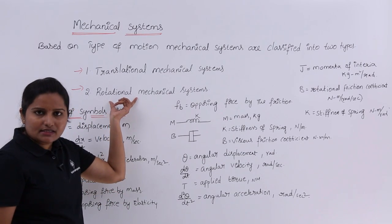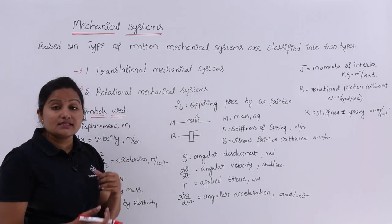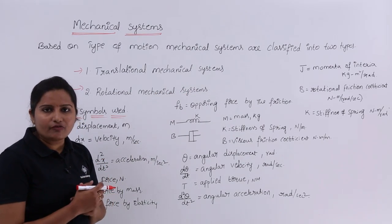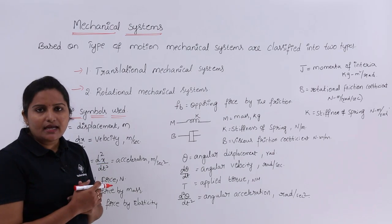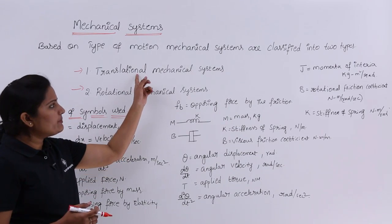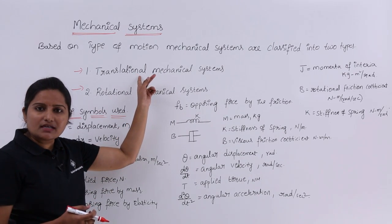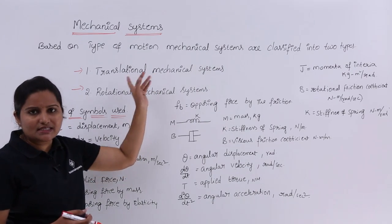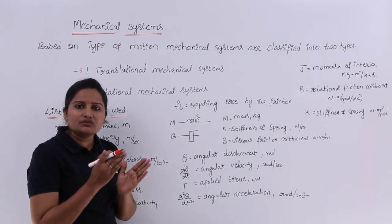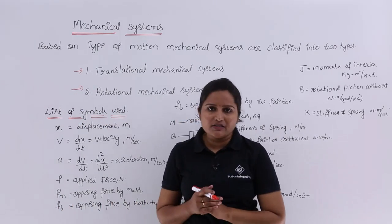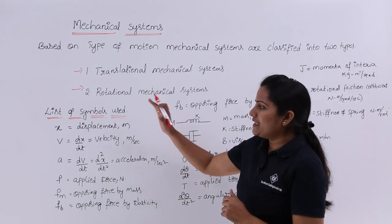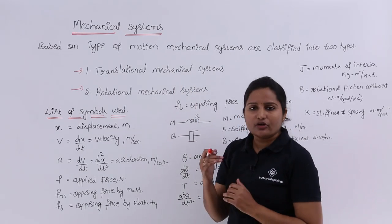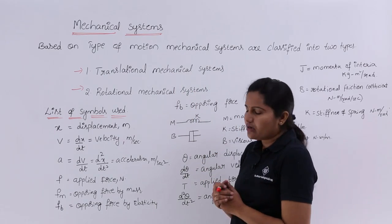The basic elements in rotational mechanical systems are moment of inertia of mass, torsional spring, and dashpot. Both of these systems have three individual elements each. Here is the list of symbols used in both translational and rotational mechanical systems.